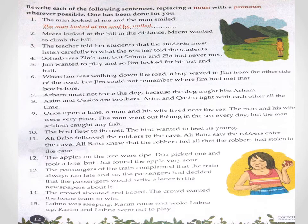Number one: 'The man looked at me and the man smiled.' اس میں 'the man' دوبارہ نہیں آئے گا — اس کی جگہ 'he' استعمال ہوگا کیونکہ یہ masculine gender ہے۔ تو answer ہوگا: 'The man looked at me and he smiled.'